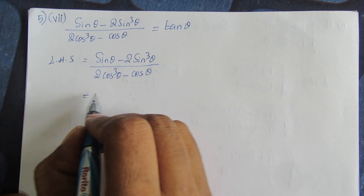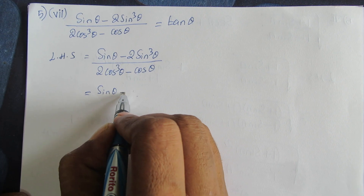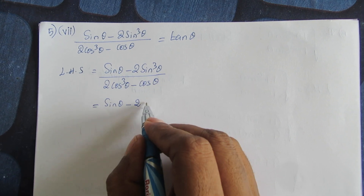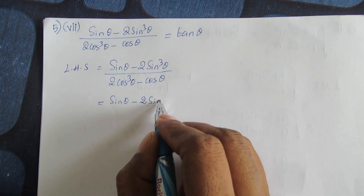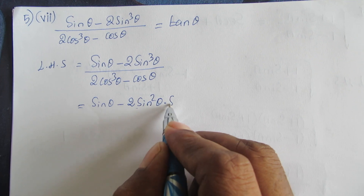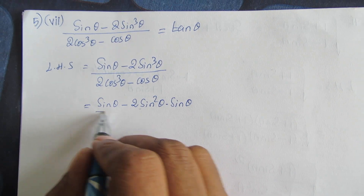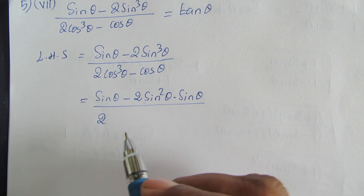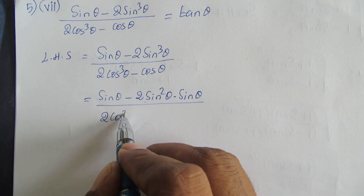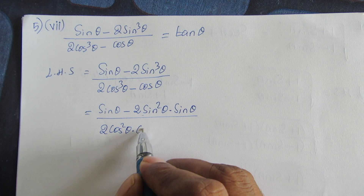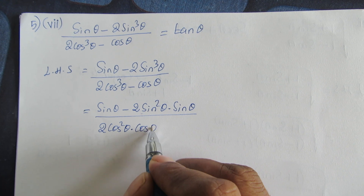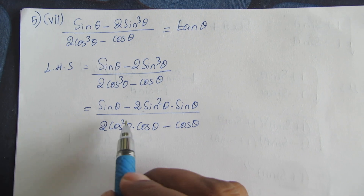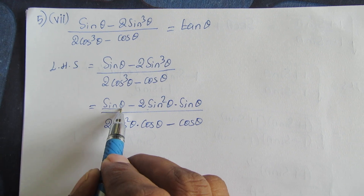So sin theta minus 2 — we can write sin cube theta as sin square theta into sin theta, divided by 2 into — we can write cos cube theta as cos square theta into cos theta, minus cos theta.